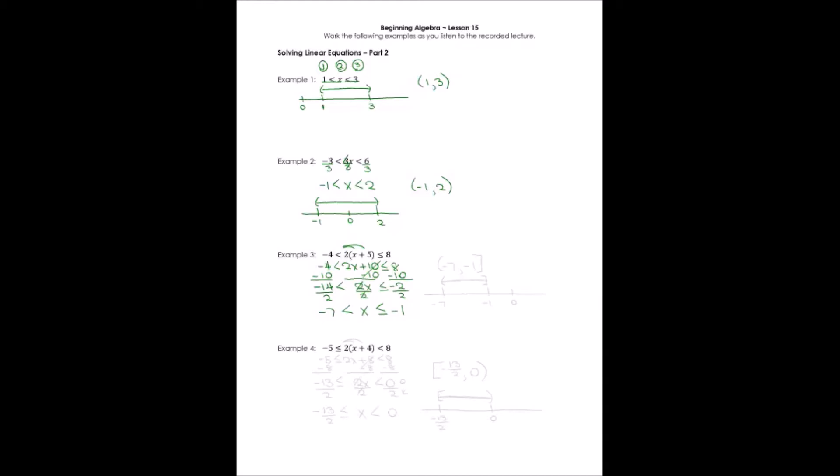Here's my number line. I have negative seven and negative one. I'll place zero over here just so I know where it is. And everything, x is everything between, is greater than negative seven. You can see how it's bigger. And it's less than or equal to negative one. So it fills in everything in between. I don't include negative seven, but I do include negative one.